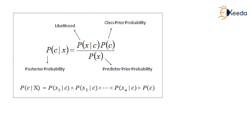Looking at the formula: the posterior probability is calculated as the probability of X given C multiplied by the class prior probability, divided by the probability of X — the prior probability. To calculate the posterior probability, we compute: P(X1|C) × P(X2|C) × ... × P(Xn|C), because we have a number of independent attributes, and for those attributes we divide by the class, and through that we calculate the probability of the class. This is the method to work with the Naive Bayes classifier.